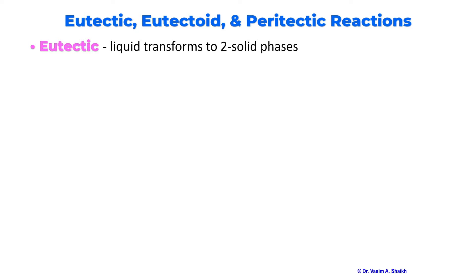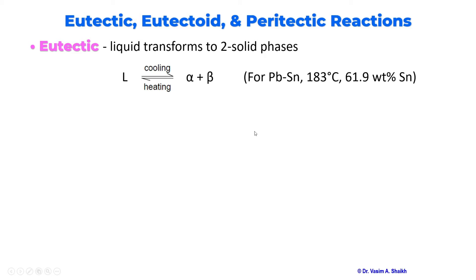So, what is eutectic reaction? In eutectic reaction, one liquid phase will transform into two solid phases. As an example, we will be looking at the lead and tin phase diagram. Whether you heat or cool, one liquid phase will transform into two solid phases — that is called a eutectic reaction.